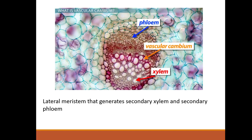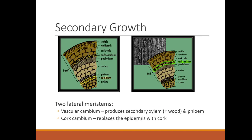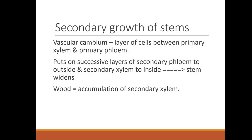Vascular cambium is a lateral meristem that generates secondary xylem and secondary phloem. In woody plants, the cambium continues to divide and produces new xylem cells toward the inside and new phloem toward the outside. There are two lateral meristems: the vascular cambium produces secondary xylem (the wood) and phloem, and the cork cambium replaces the epidermis with cork. Vascular cambium is the layer of cells between the primary xylem and primary phloem, putting on successive layers outward and inward, which increases the stem.